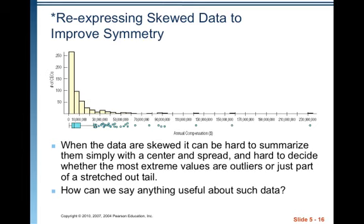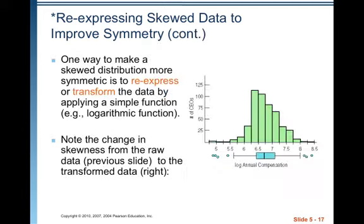Sometimes we need to re-express our skewed data to improve the symmetry because then we can really look at mean and standard deviation. Some of the methods we're going to use later on will be valid once we've improved symmetry. When data are skewed, it can be hard to summarize them simply with a center and spread and hard to decide whether the most extreme values or outliers are just part of a stretched out tail. One way to make a skewed distribution more symmetric is to re-express or transform the data by applying a simple function, for instance, you can take the common log of the data.